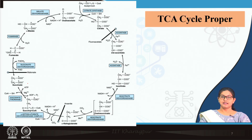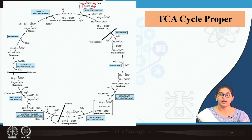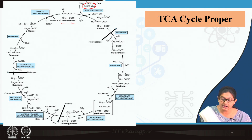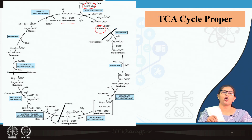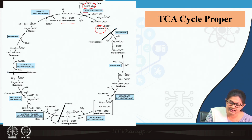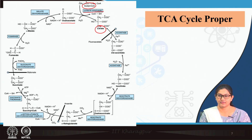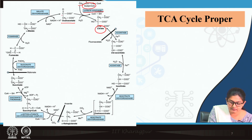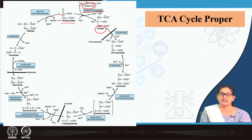Let us see what is happening in the TCA cycle. Acetyl coenzyme A, which is formed from pyruvate, enters the TCA cycle and combines with oxaloacetate — a 4-carbon molecule — to generate citrate. The cycle is named the citric acid cycle because citric acid undergoes cyclical conversion to different molecules. Citrate is formed with the help of the enzyme citrate synthase, which forms a direct carbon-carbon bond between the acetyl group of acetyl coenzyme A and the carbonyl group of oxaloacetate.